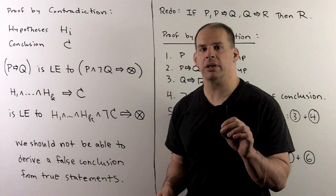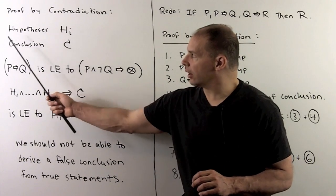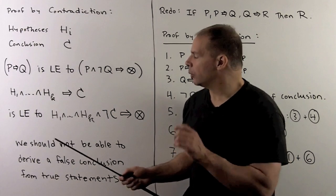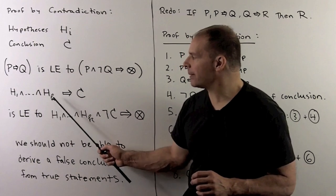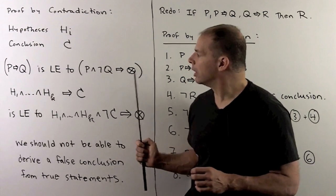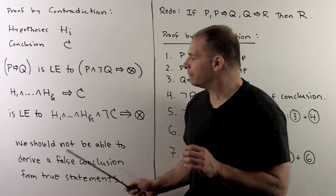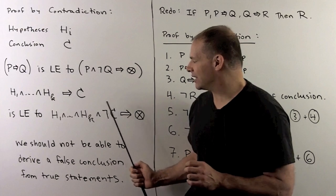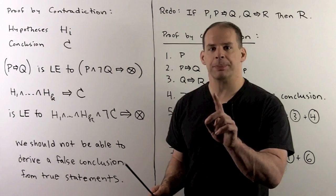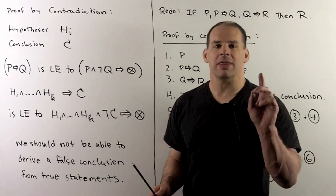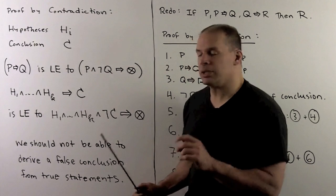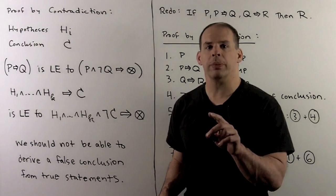For proof by contradiction from reductio ad absurdum: to show a theorem with hypotheses h sub i and conclusion c is true, we want to show h1 and h2 up through h sub k implies c. Applying reductio ad absurdum gives the logically equivalent statement that h1 through h sub k and not c implies a contradiction. If we derive a false statement from this collection, one of the originals must be false — and the only candidate is not c. So not not c is true, meaning the conclusion is true.